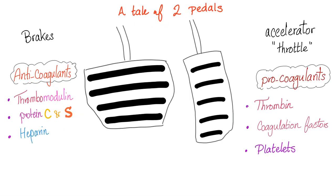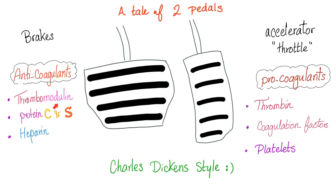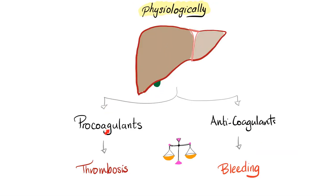Every protein is procoagulant; every protein is anticoagulant — it's a tale of two sides. Procoagulant proteins secreted by the liver include thrombin, coagulation factors, and — indirectly — platelets via thrombopoietin. However, the same liver also secretes anticoagulants: thrombomodulin (when thrombin binds it, thrombin becomes anticoagulant), protein C and S (the brakes of factor 5 and 8), and naturally occurring heparin. Physiologically, the liver secretes both procoagulants and anticoagulants; the key is the balance.